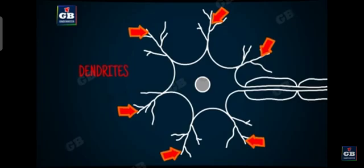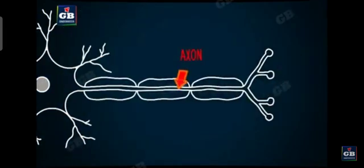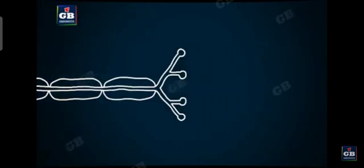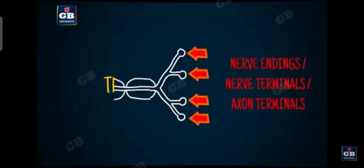Here we find a long fiber extending from the cell body. This long fiber is called axon. At the end of the axon, we will find some small branches called nerve endings. So the tips of the axon are called nerve endings or nerve terminals.